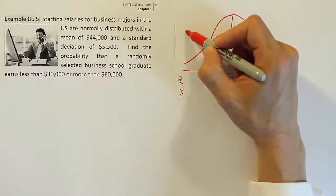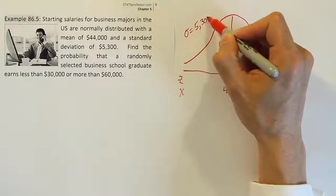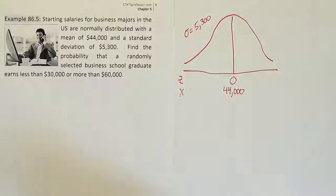Now we have a standard deviation given to us. We're going to put that in the upper corner. That's $5,300. Okay, so we have everything we need right now to start the problem.